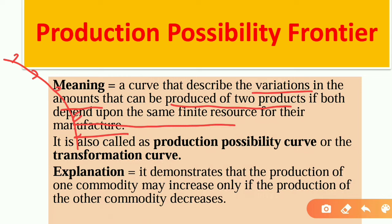We can see the different possibilities. The curve describes variations in amounts — for example, four chapters. It describes the difference between the two products — reading and MCQs. These are the two products. These are the two products whose combination we can see on the production possibilities curve.